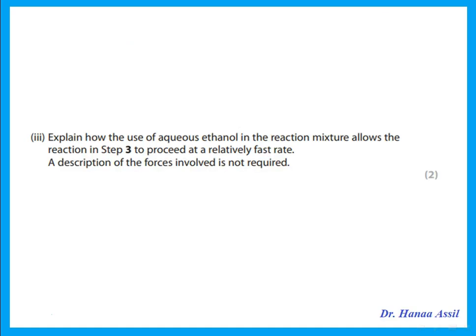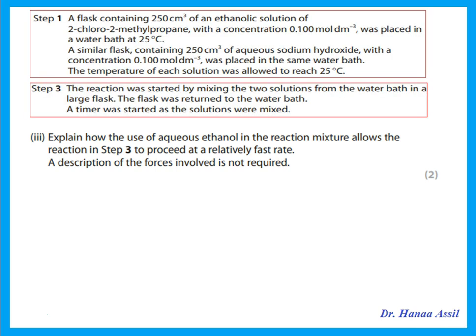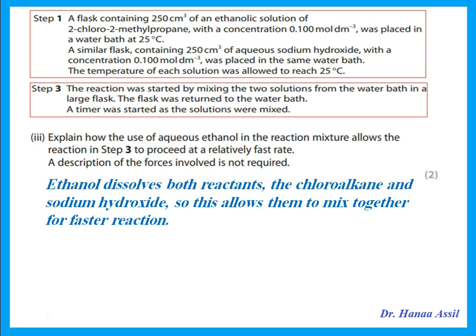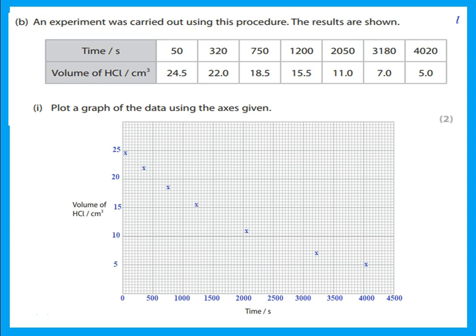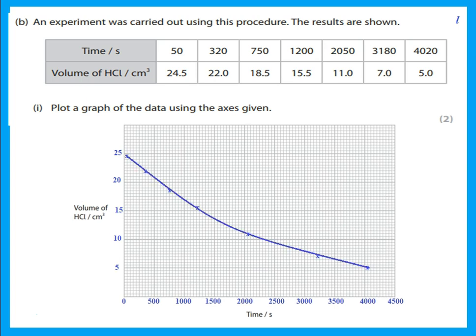Explain how the use of aqueous ethanol in the reaction mixture allows the reaction to proceed at a relatively fast rate. Ethanol dissolves both reactants — the chloroalkane and the sodium hydroxide — allowing them to mix together easily and causing a faster reaction. He gives a table of results and says to plot a graph using the axes given. We distribute the numbers on the x and y axes, plot with small crosses, and join with a line of best fit.